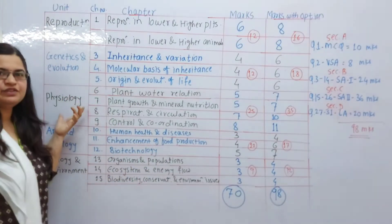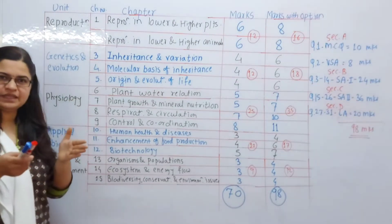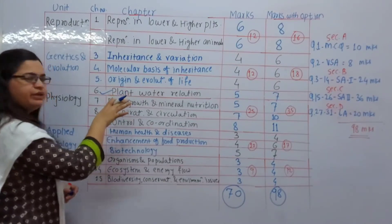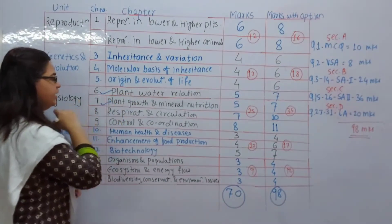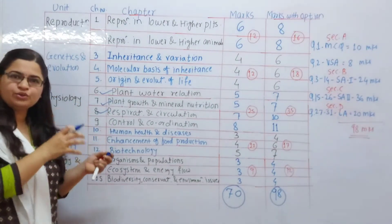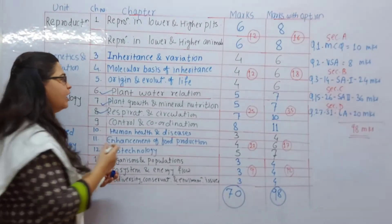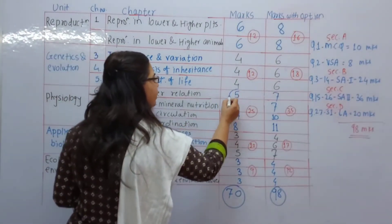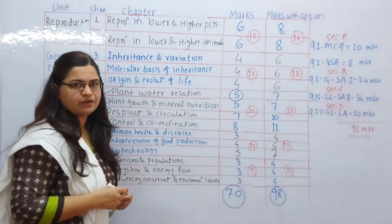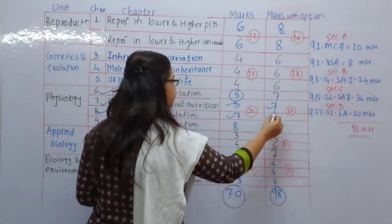The third unit is Physiology. Some chapters have been added, like Plant Water Relations and Respiration — which were earlier in the 11th standard. These chapters are now added in Physiology. This chapter alone is 5 marks without options and 7 marks with options. Plant growth and mineral nutrition is also a separate chapter, so you can divide that chapter into two parts.